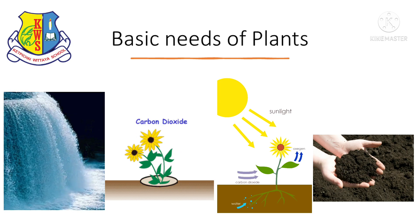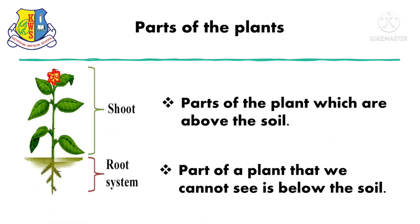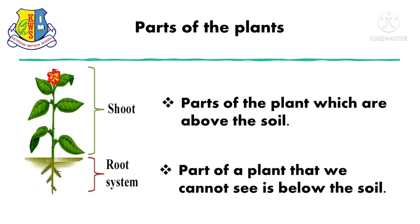take a look at the previous lesson — parts of the plants. To understand easily, we divided the plant into two components: shoot and the root system. The shoot is the part of the plant which is above the soil.